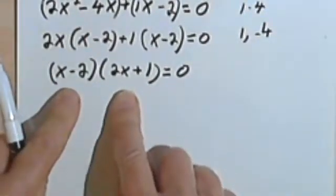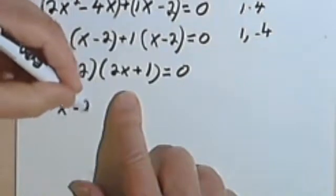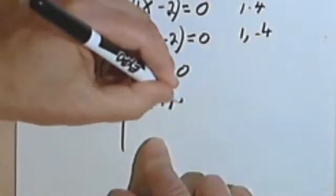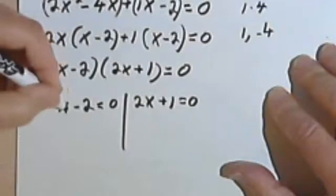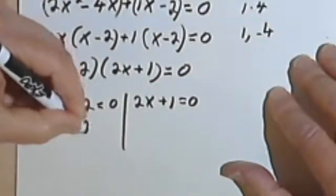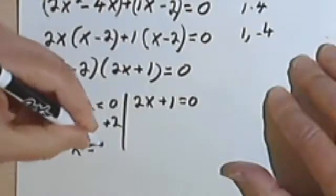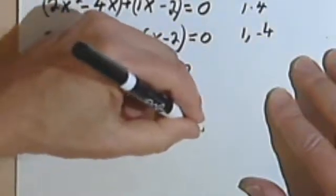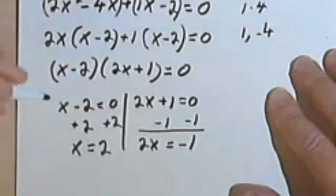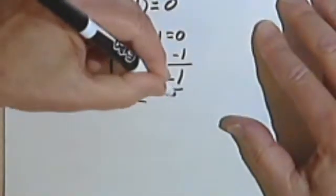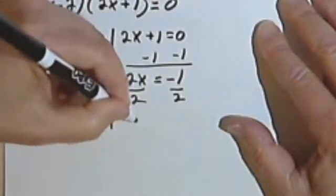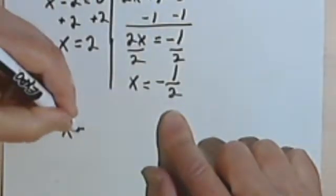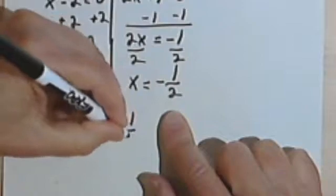Now I'm going to take each of the factors and set it equal to 0. So I get x minus 2 equals 0, and 2x plus 1 equals 0. Solving the first one, I just add 2 to both sides and get x equals 2. For the second, I subtract 1 from both sides to get 2x equals negative 1, then divide both sides by 2, and I get x equals negative 1/2. So my answers are x equals 2 and x equals negative 1/2.